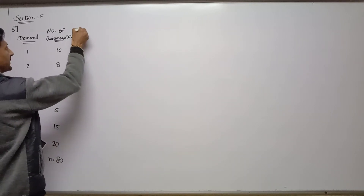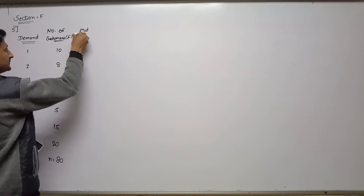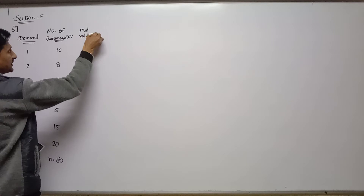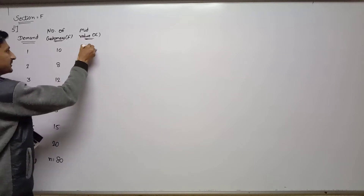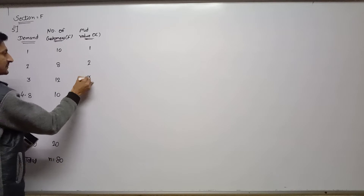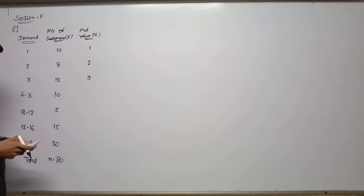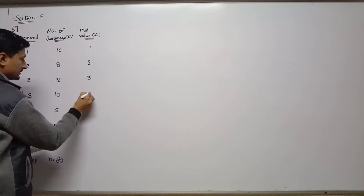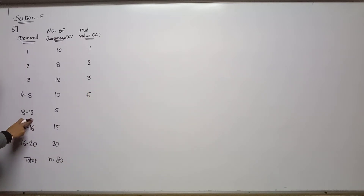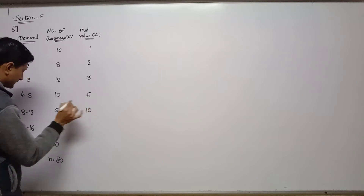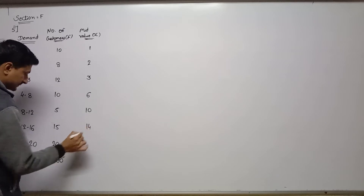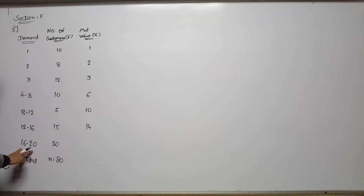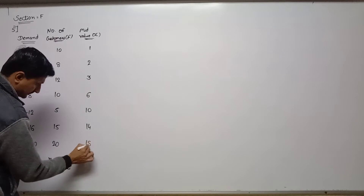Next column: find out mid value, denoted by X. Each class: lower limit plus upper limit divided by 2. First three values as-is: 1, 2, 3. Next: 4+8 by 2 = 6; 8+12 = 20 by 2 = 10; 12+16 = 28 by 2 = 14; 16+20 = 36 by 2 = 18.